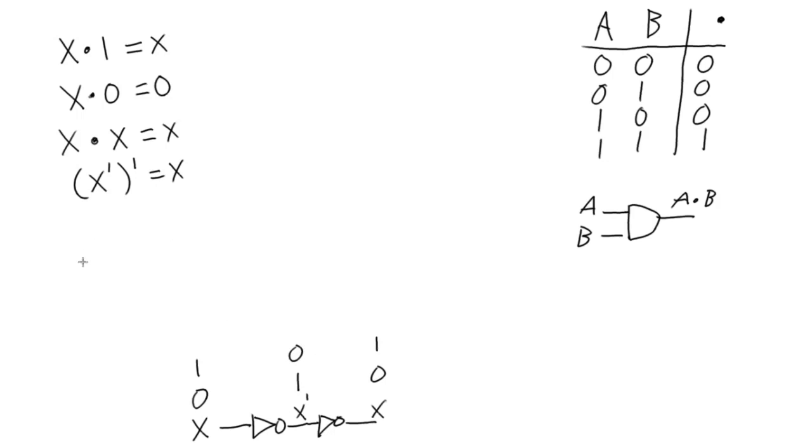And then we've also got, our last one is X and X prime equals 0. So let's look at this. This is saying that whatever one input is, the other one is going to be the opposite. So what that means is our input's never equal.